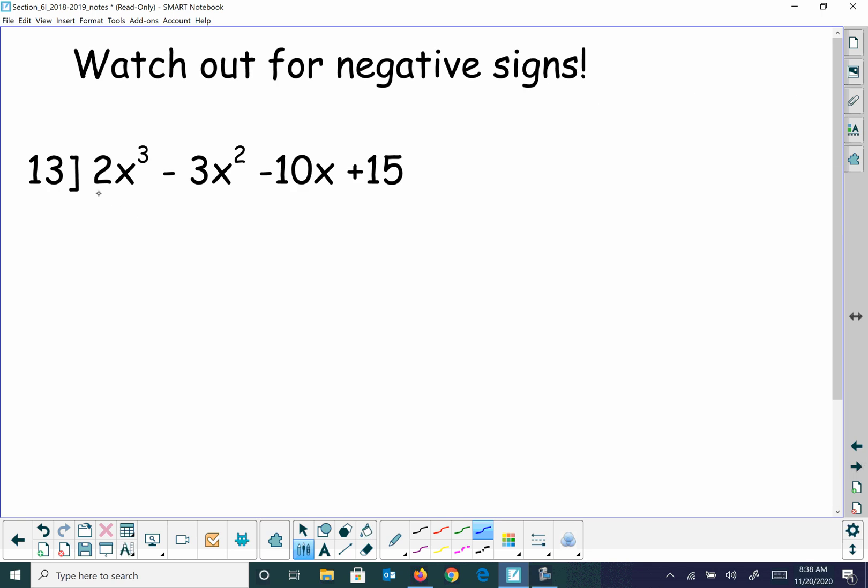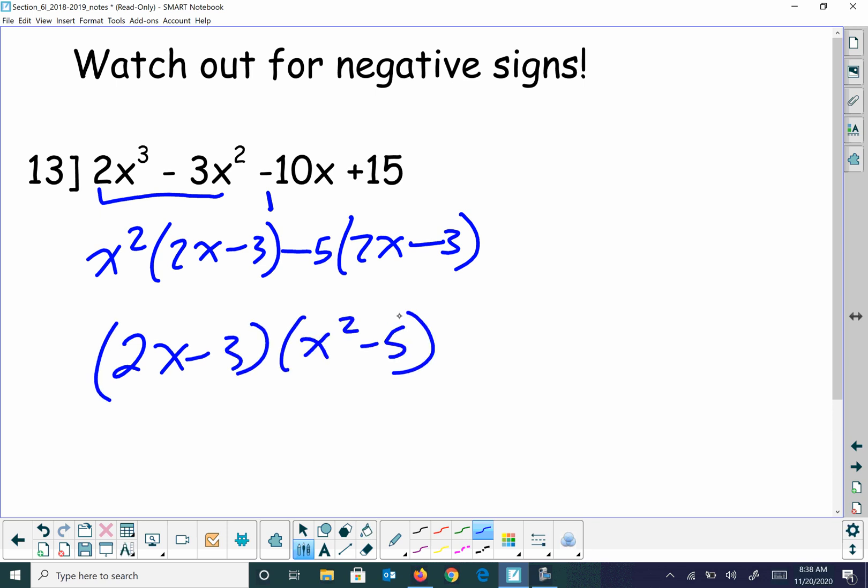Watch out for the negative sign. So on this one, all I'm going to do is I'm going to factor out x squared, and that's going to give me 2x minus 3. Make sure that negative sign is taken out. That leaves me 2x. This sign changes because I factor out a negative. Then I'm left with 2x minus 3 and x squared minus 5. If nothing factors out beyond that.